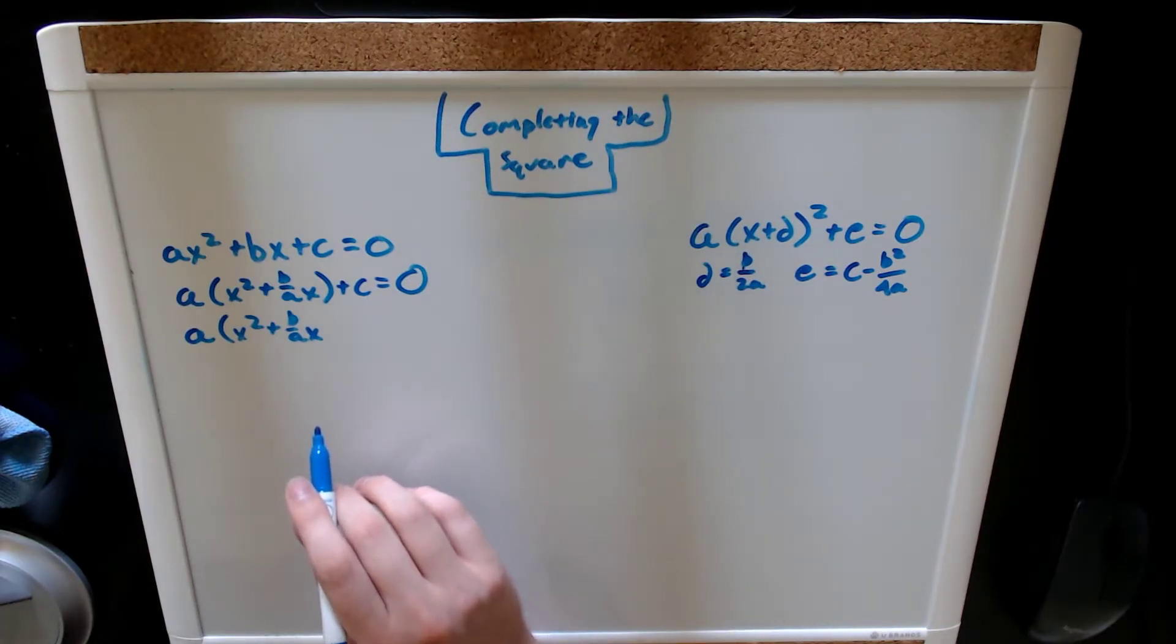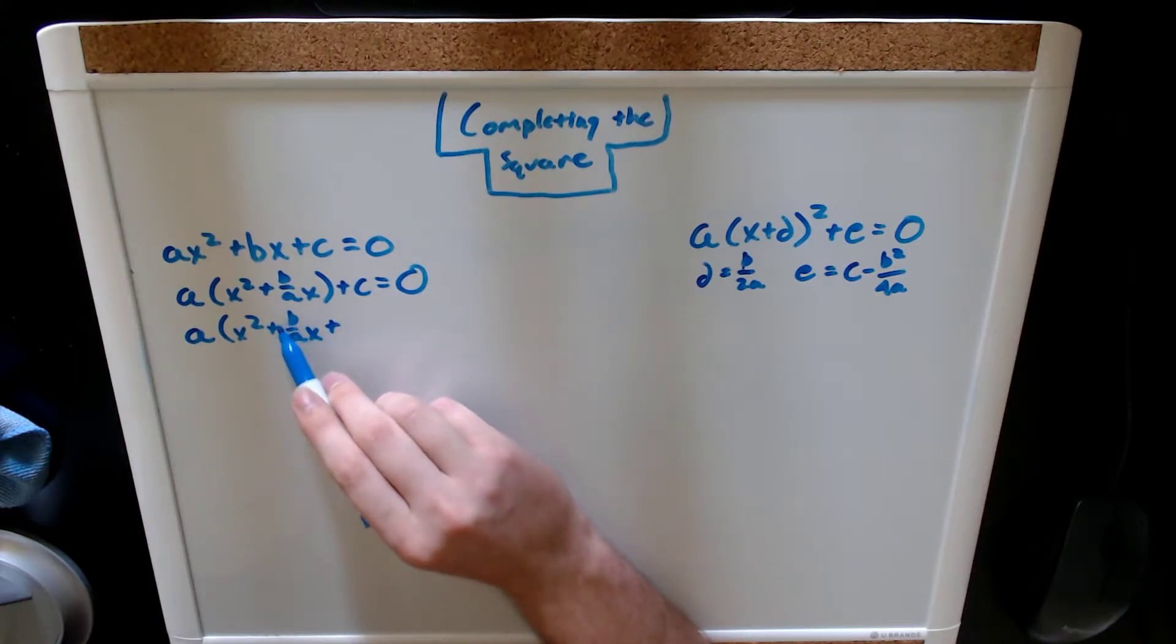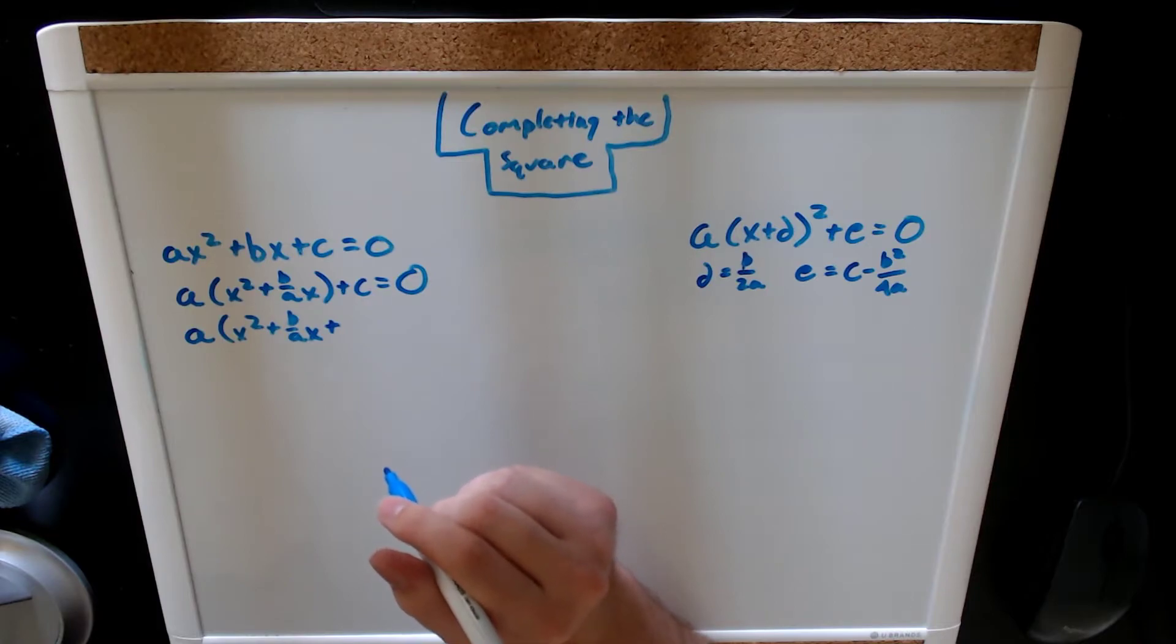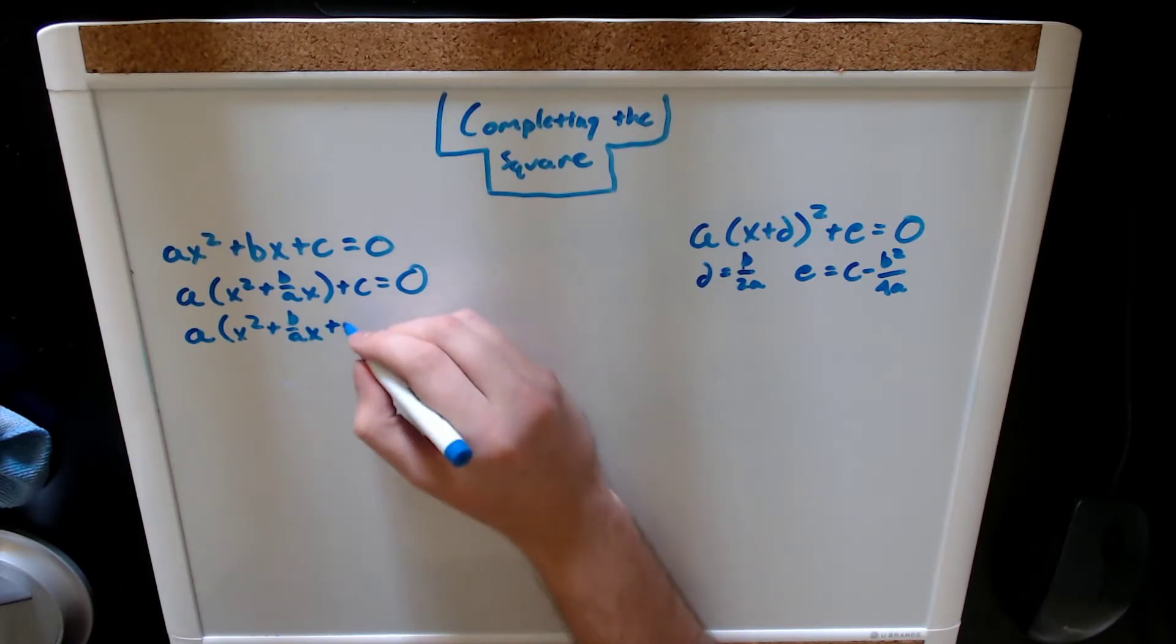I can tell you off the bat that our c value is going to be our b value, or in this case, our b over a value, divided by two squared. So, that's going to be b over a divided by two, which is b over 2a, squared, which is b squared over 4a squared.